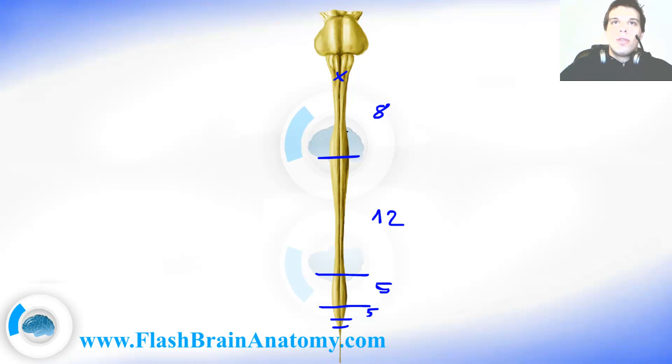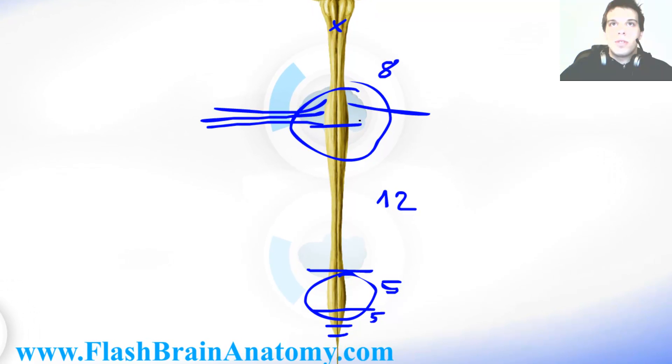Now you probably noticed two enlargements here and here. Those enlargements are explained because here at these places a lot of spinal nerves leave for the extremities, for the limbs.